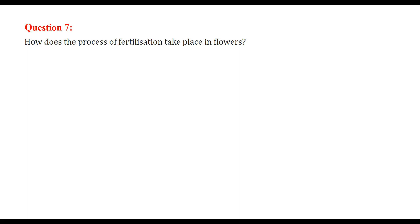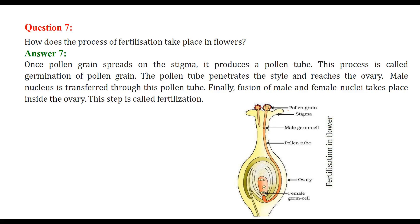How does fertilization take place in flowers? Once the pollen grain lands on the stigma, it produces a pollen tube. This process is called germination of the pollen grain. The pollen tube penetrates the style and reaches the ovary. The male nucleus is transferred through this pollen tube, and then the fusion of male and female nuclei takes place inside the ovary. This is called fertilization.